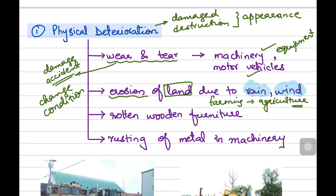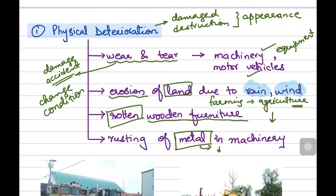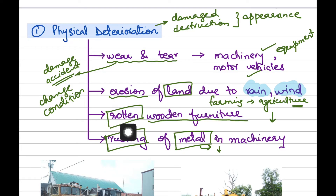Similarly, if the business holds some wooden furniture using it in its premises, it can get damaged because of rot that the wood will attract, which will again decrease the value of that non-current asset. And lastly, a very important material used in machinery is metal. That metal can get damaged, destroyed, or decrease in value if it attracts rust. So all these factors — wear and tear, erosion of land, wooden furniture getting rotten, or rusting in metal — will come under physical deterioration of non-current assets.